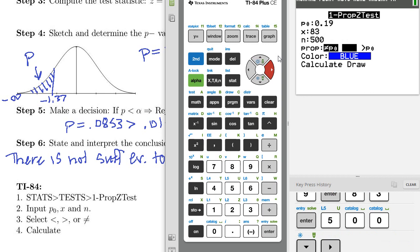We are doing a lower tail test, so less than p_0. And why don't we go ahead and do a draw.